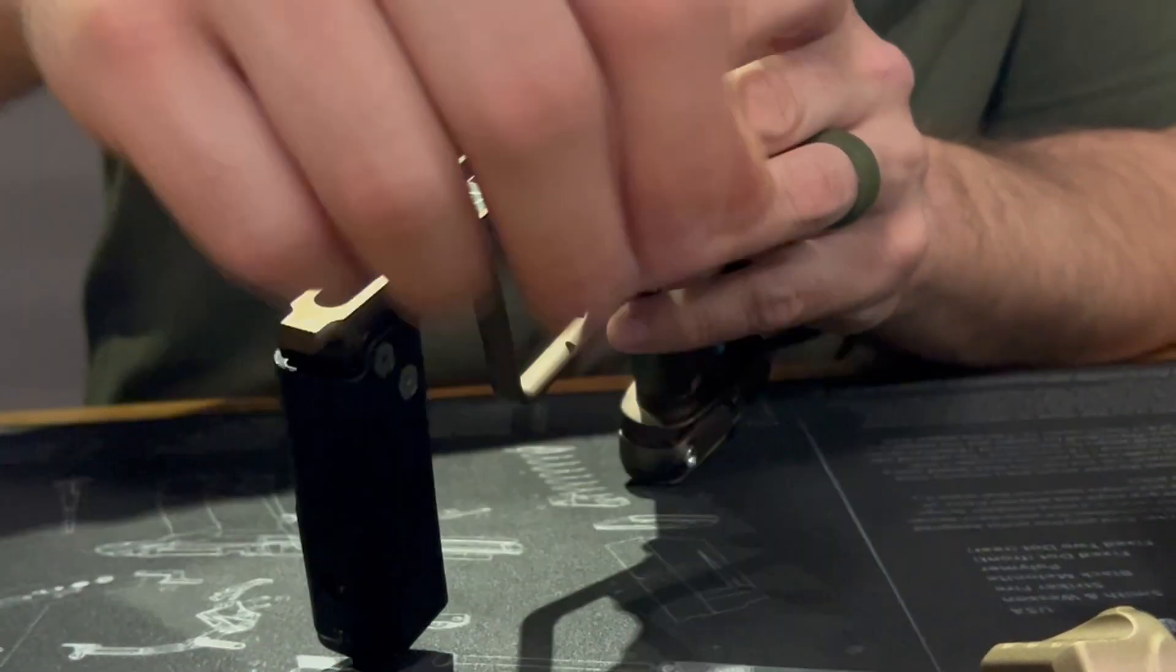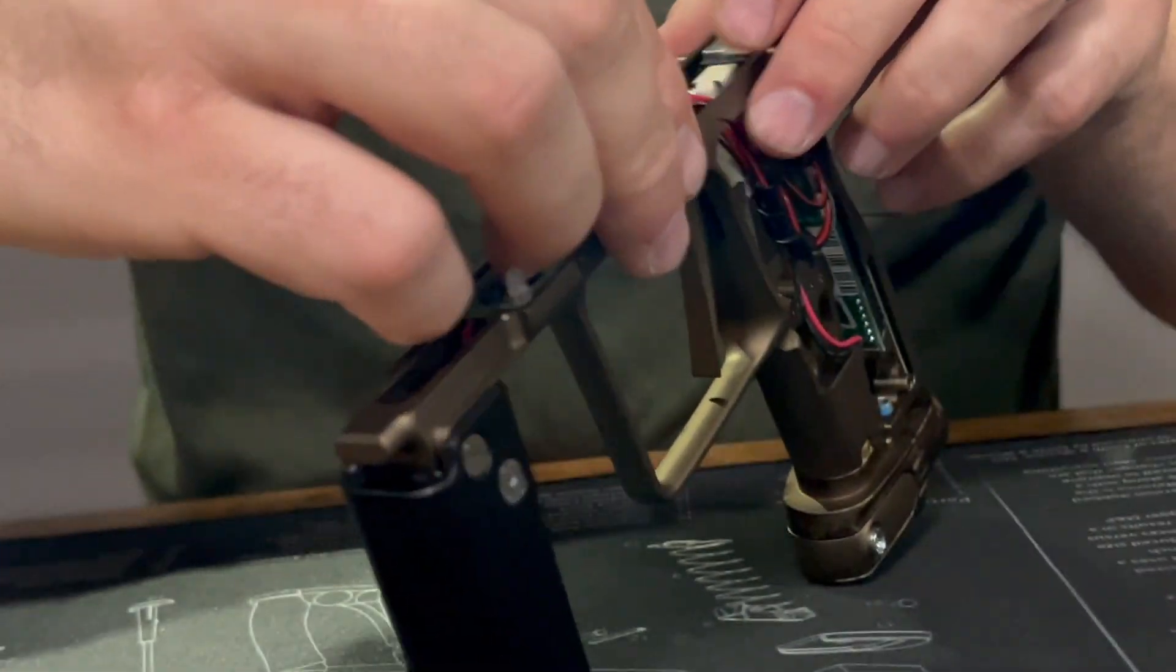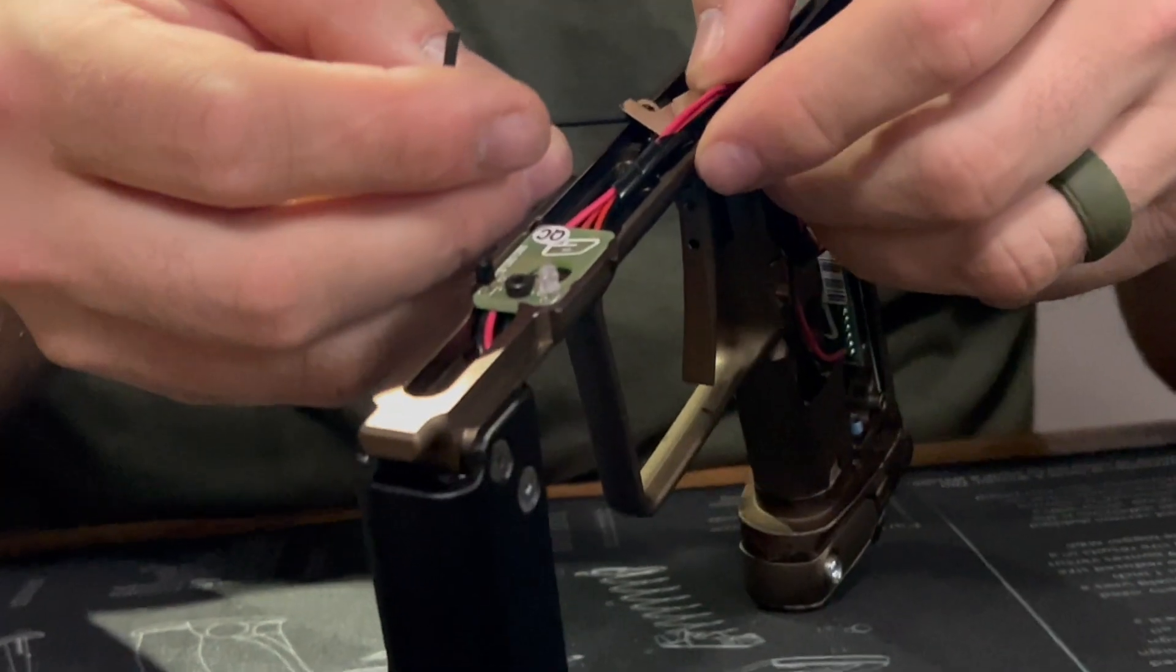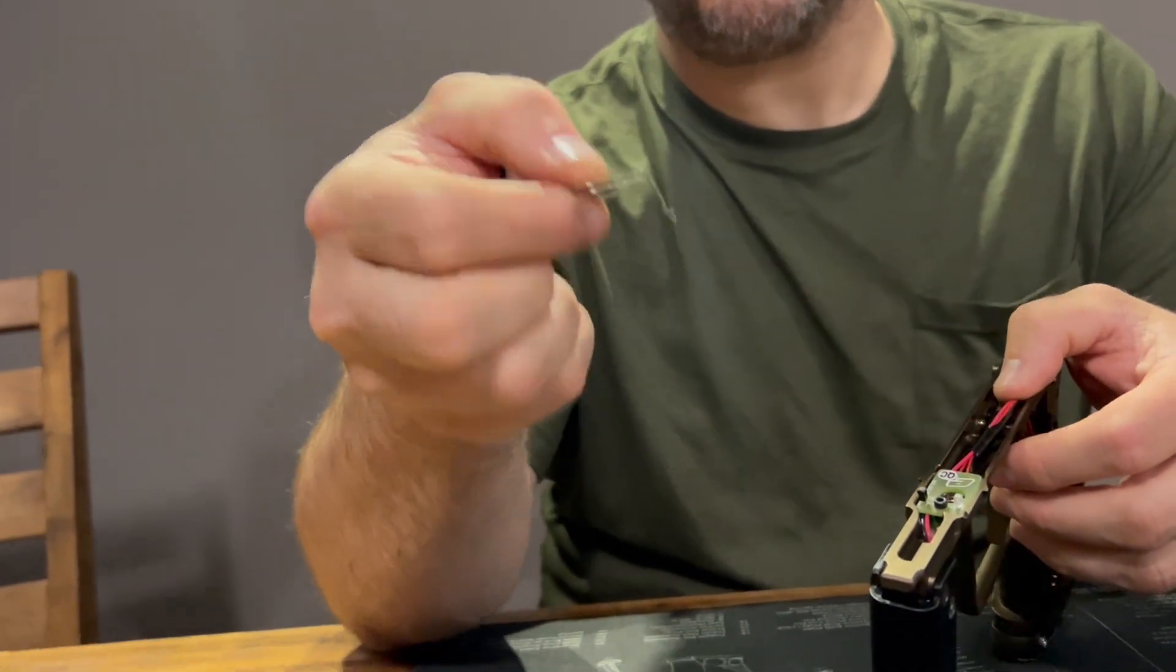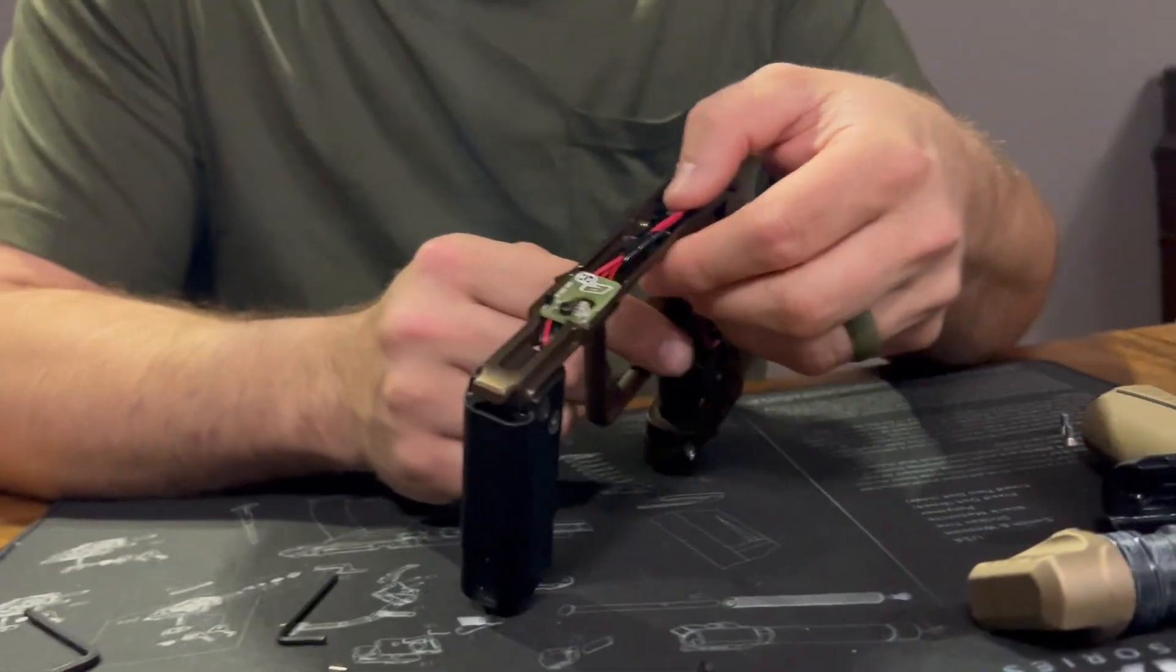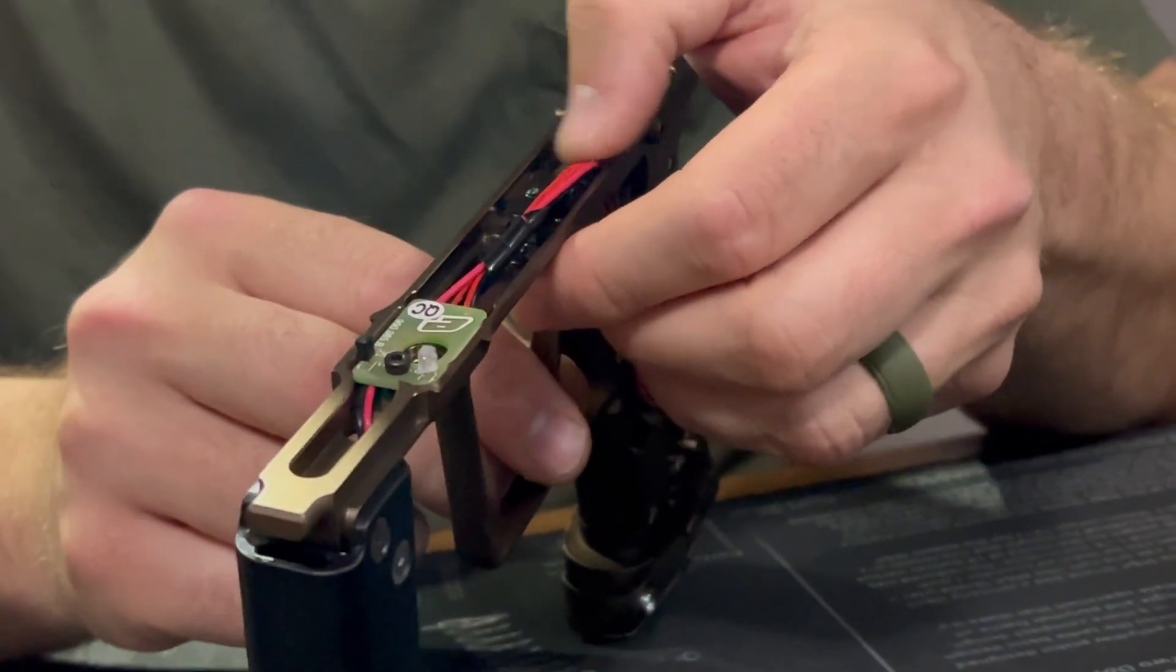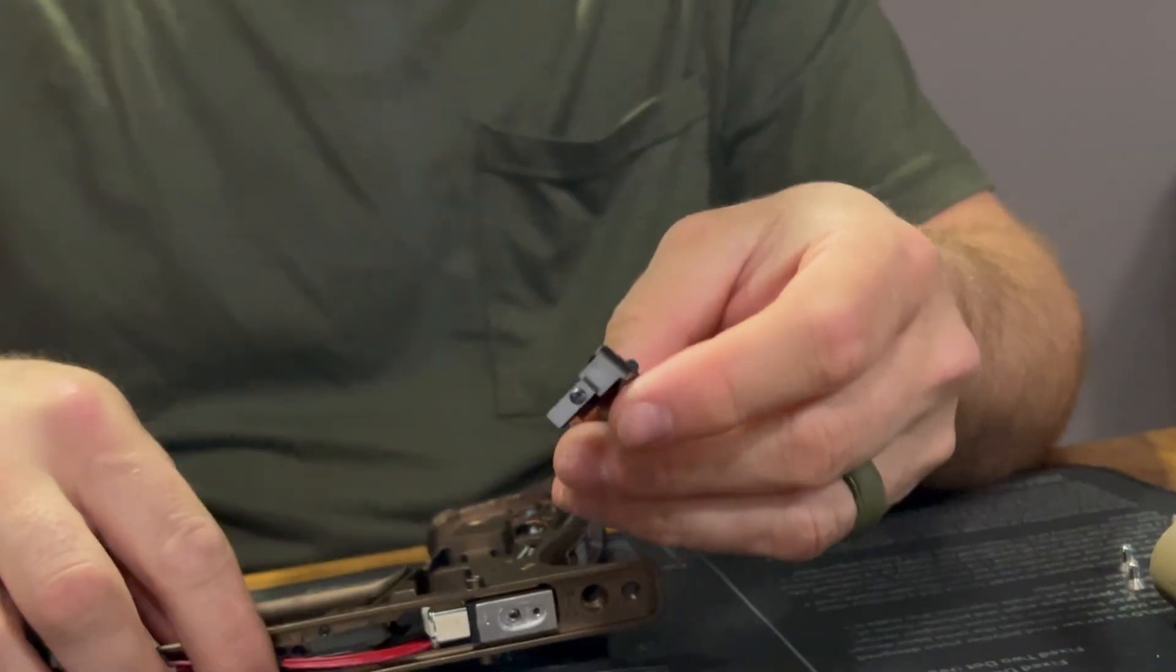This piece we're about to take out is actually what gives you your spring tension. All you got to do is just slide your wires over a little bit and just kind of rotate this right out. That just gives you a little bit of spring tension on your trigger. You just pull it up, and then your trigger will come right out the top. You're just sliding your wires over, being careful not to pinch them. That's what takes your trigger out.